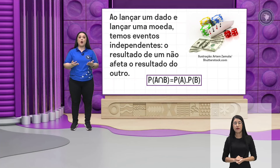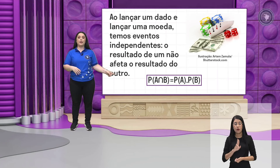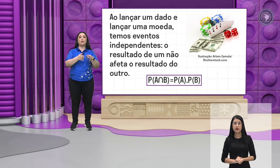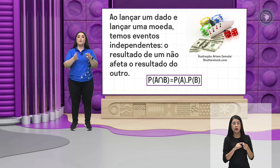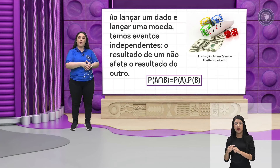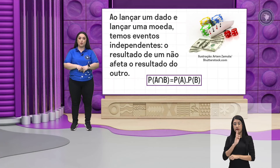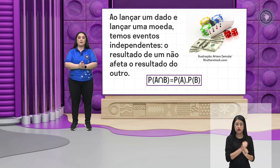Quando a gente calcula a probabilidade dos dois eventos juntos, utilizando a fórmula de interseção dos dois eventos, basta calcular a probabilidade do evento sobre o dado e multiplicar pela probabilidade do evento sobre a moeda. Aí a gente chega no resultado da probabilidade dos dois juntos, porque eles são independentes. Eu calculo cada um separadamente e multiplico os resultados.